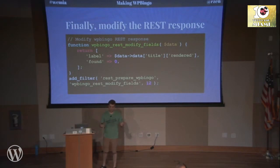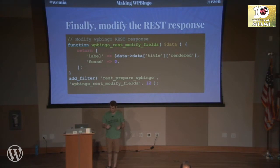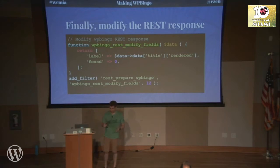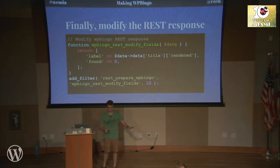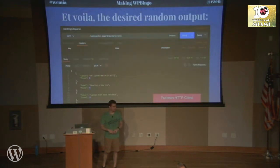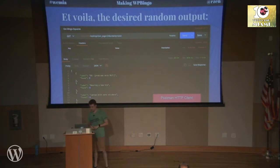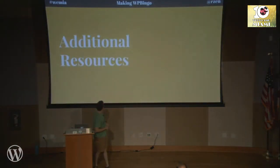I also modified the REST response — I didn't have to, but I wanted to so I wouldn't have to do it in JavaScript. I just tell it: give me the title and call it a label, and set found to zero by default because nobody has found anything on a brand new board. That was everything I had to write in WordPress PHP to make the whole thing work. Then I verified it by hitting the endpoint via Postman.